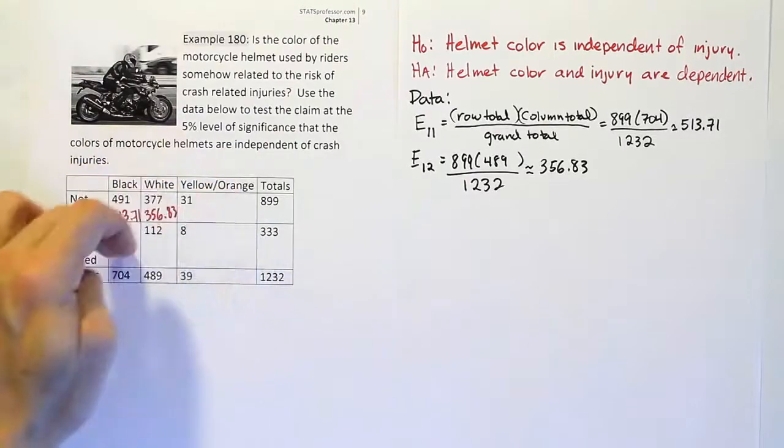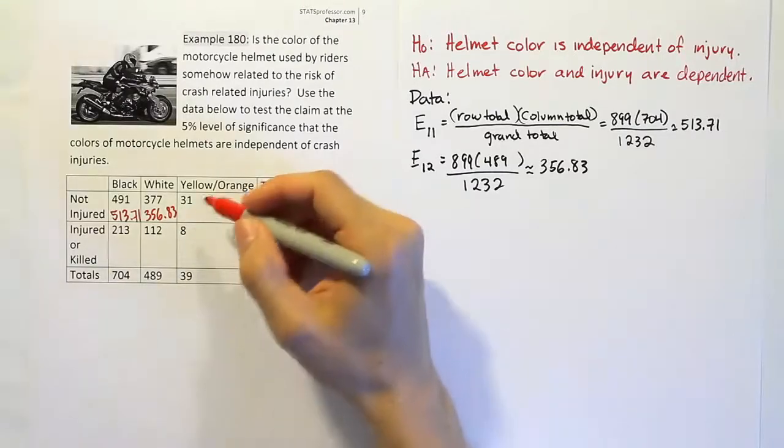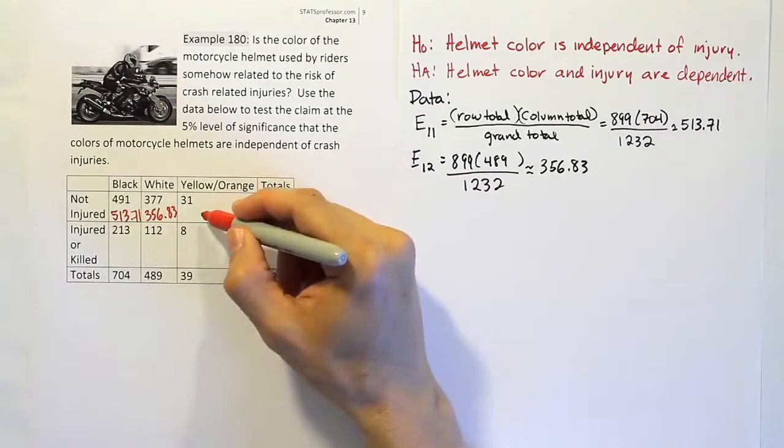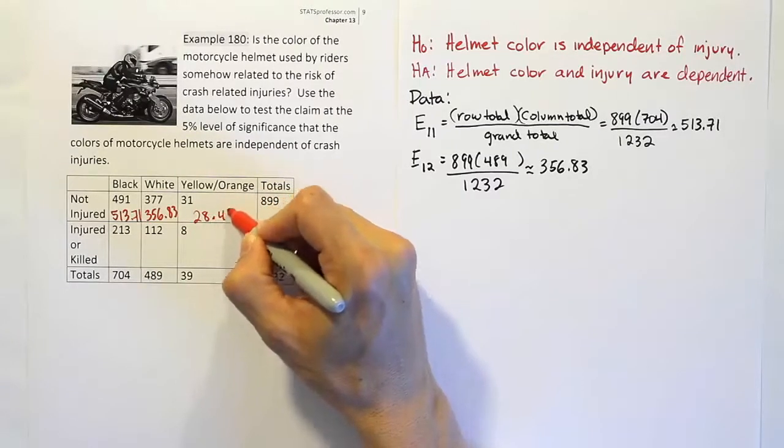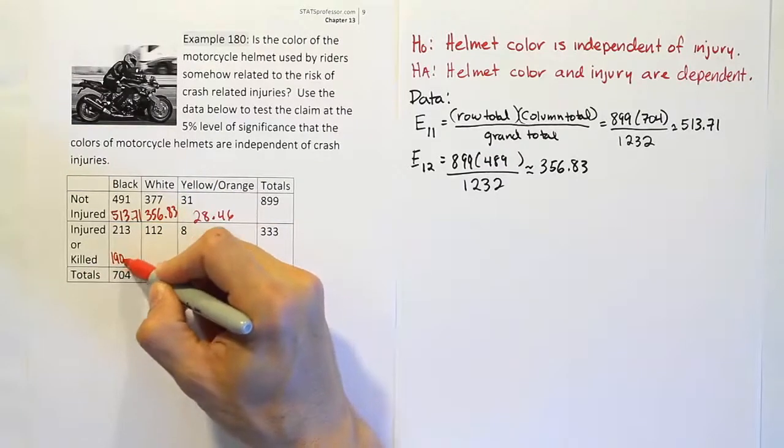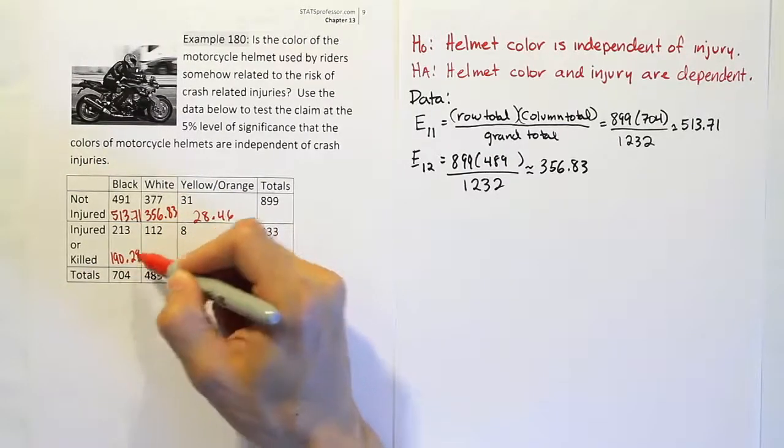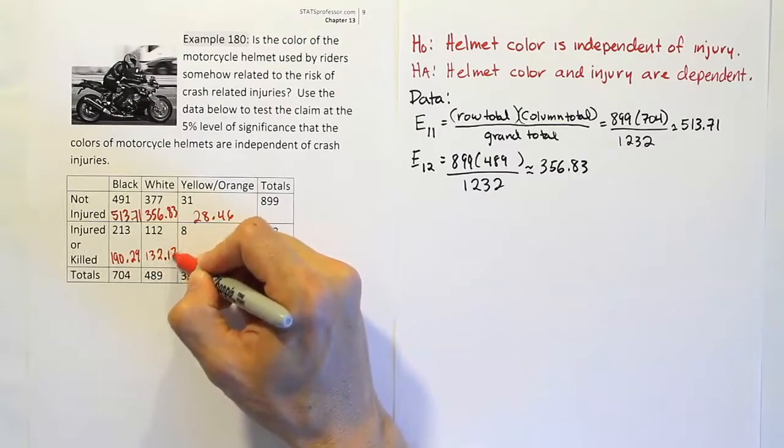Now I'm going to fill in these other 2 or 3 here in a row because I know them already, and it's just going to be time consuming to work them all out. I think you've got the hang of it now. The remaining values: first row, third column gives us 28.46. Then this position gives us 190.29. And the next position is 132.17.